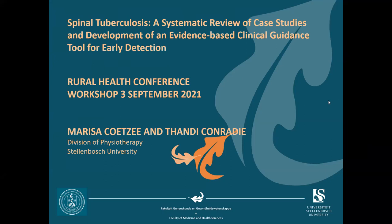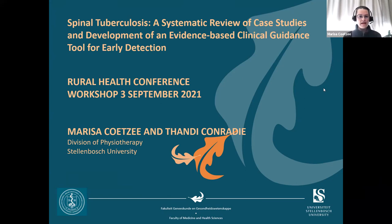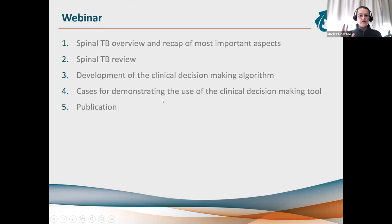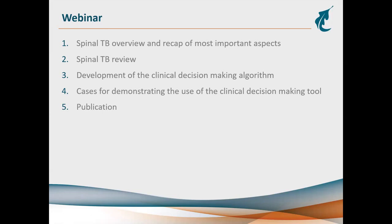The topic for today is spinal tuberculosis. We did a systematic review of case studies, and we developed an evidence-based clinical guidance tool for early detection of spinal TB. We'll give a brief overview and recap the most important aspects, then skip the review and talk about the algorithm itself, and do just one or two case studies to demonstrate how the tool works.